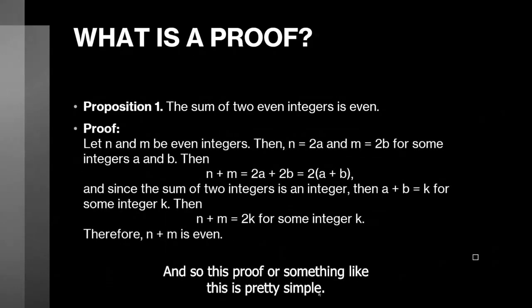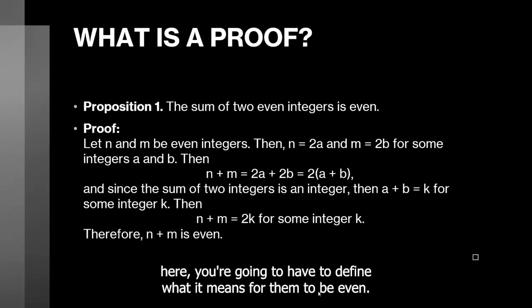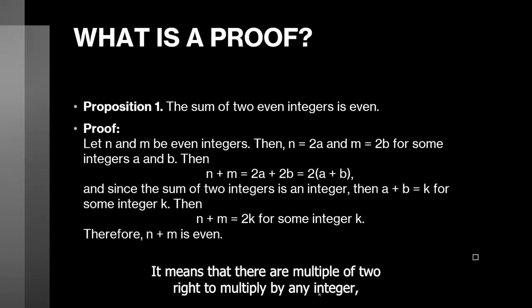And so this proof for something like this is pretty simple. You start off with your two even integers. Here, you're gonna have to define what it means for them to be even, which you may be familiar. It means that there are multiple of two, two multiplied by any integer.